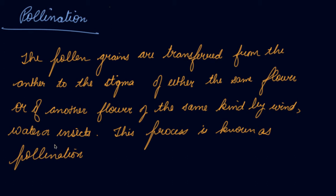After pollination, the ovary expands or swells up and changes into the fruit, and the ovules change into the seeds. If you look at an apple from inside, you can see there are some seeds inside. These seeds were the ovules before, when the apple was still a flower.